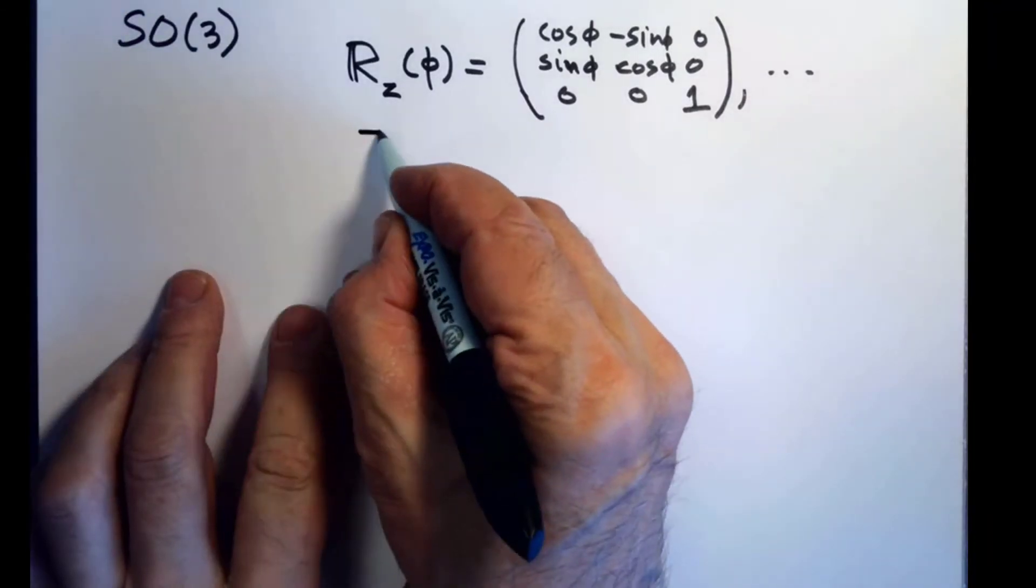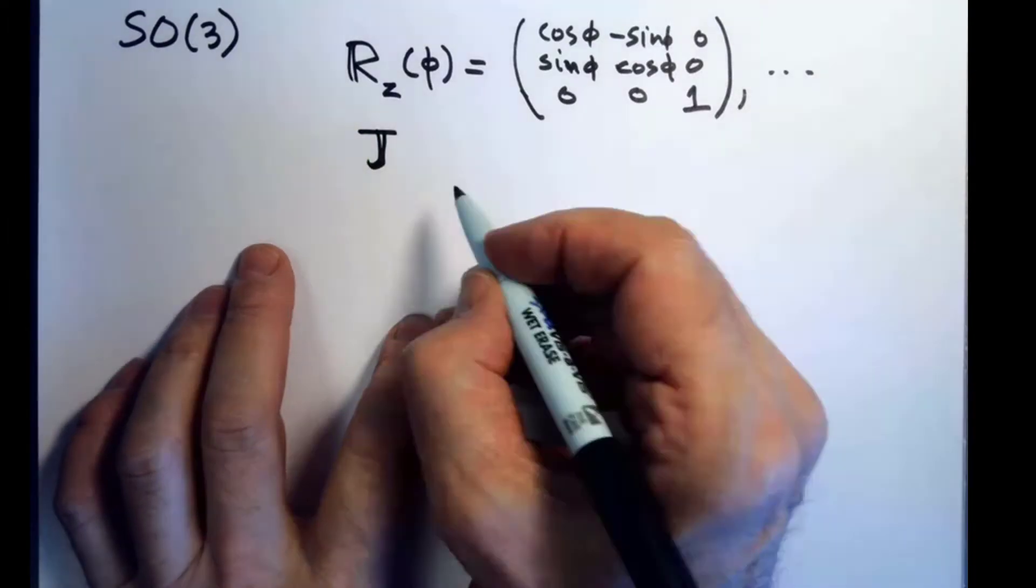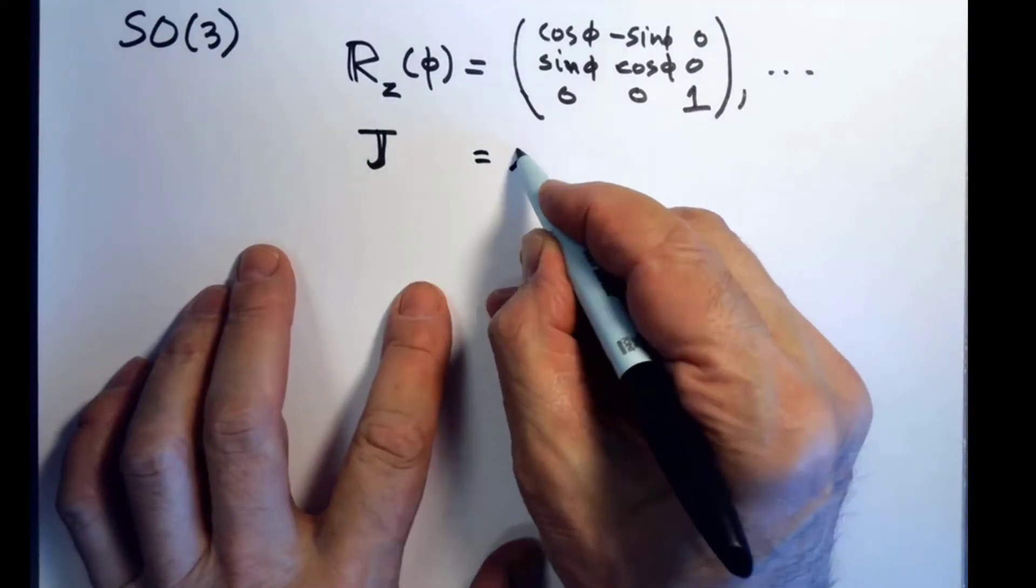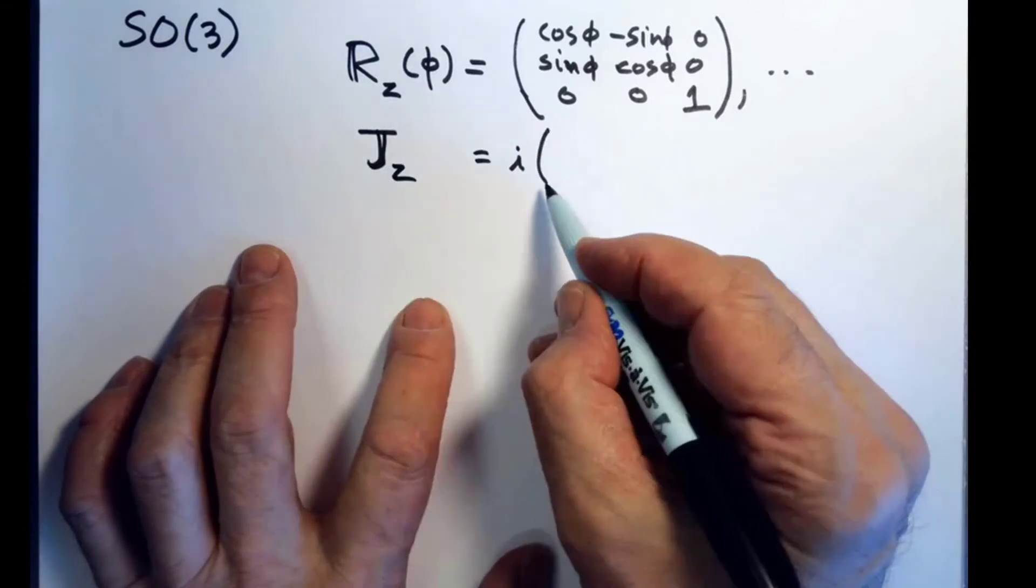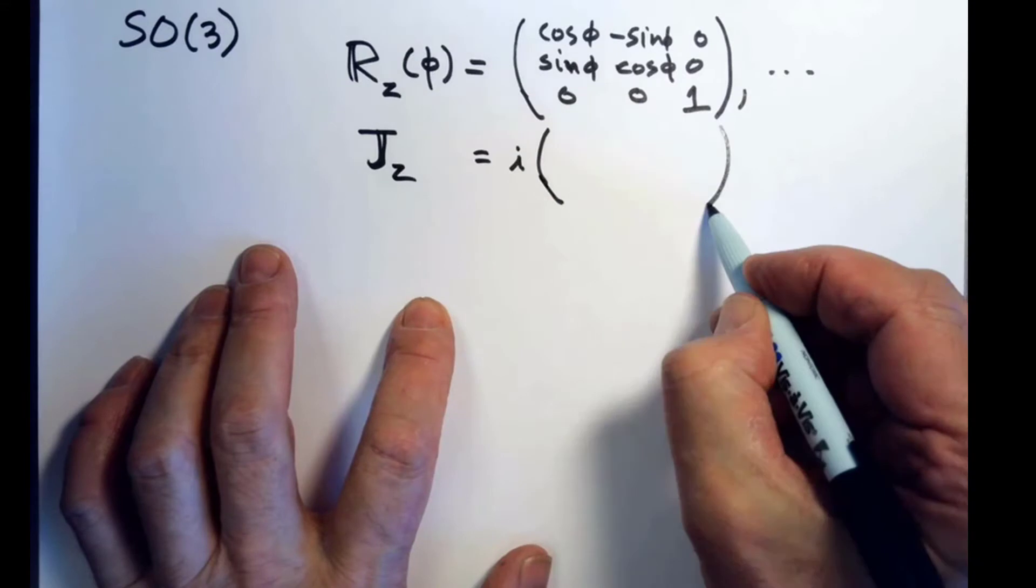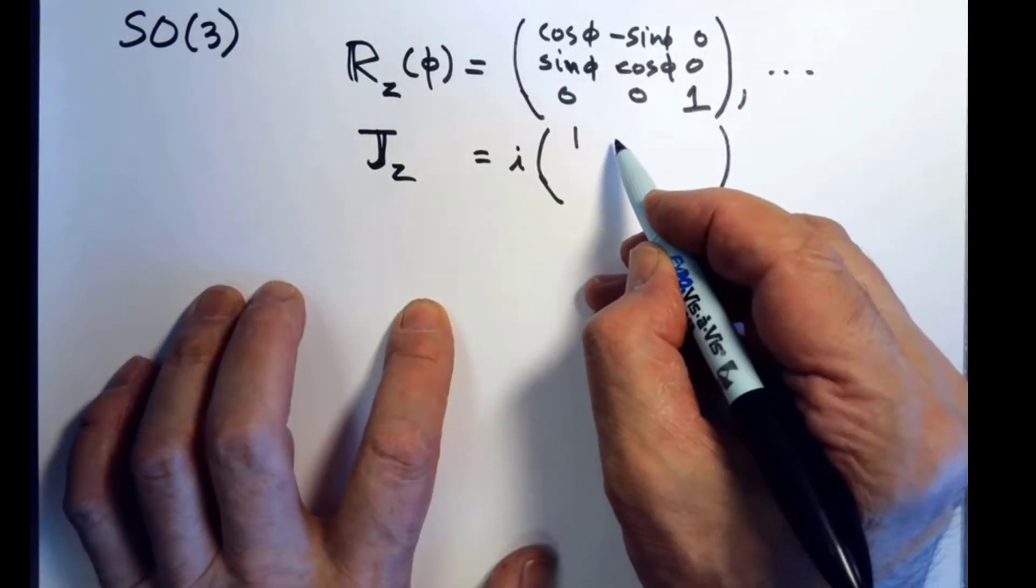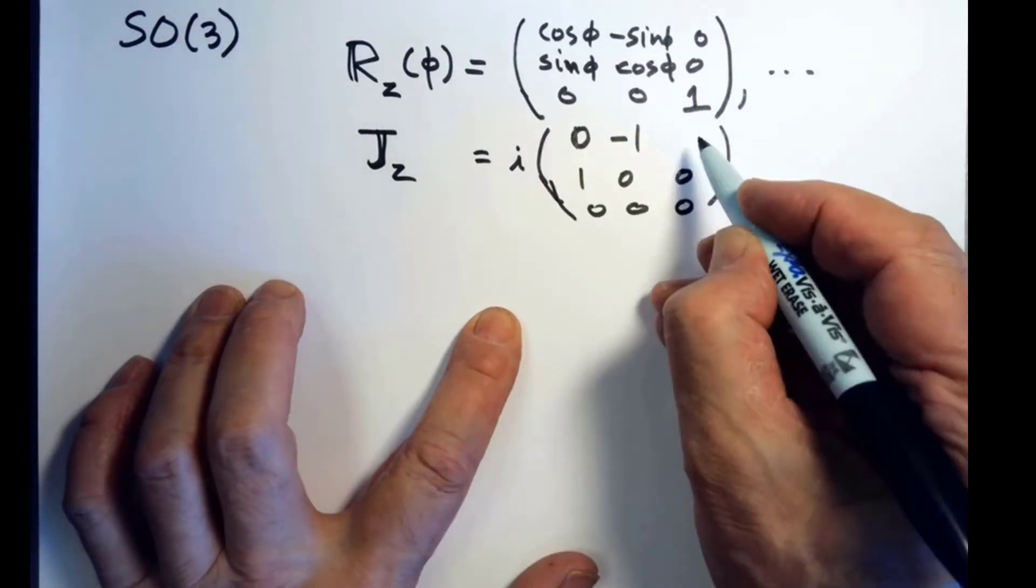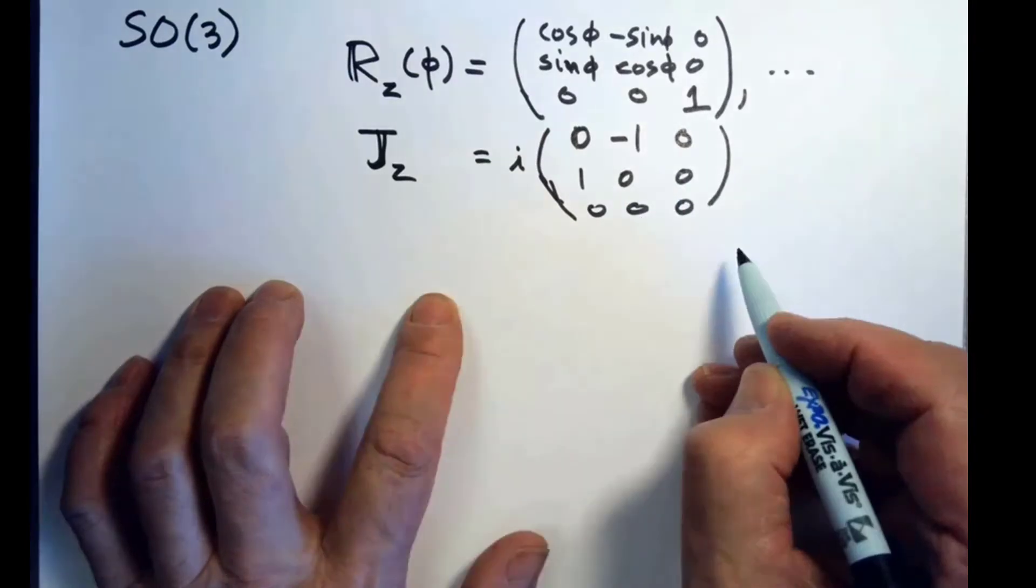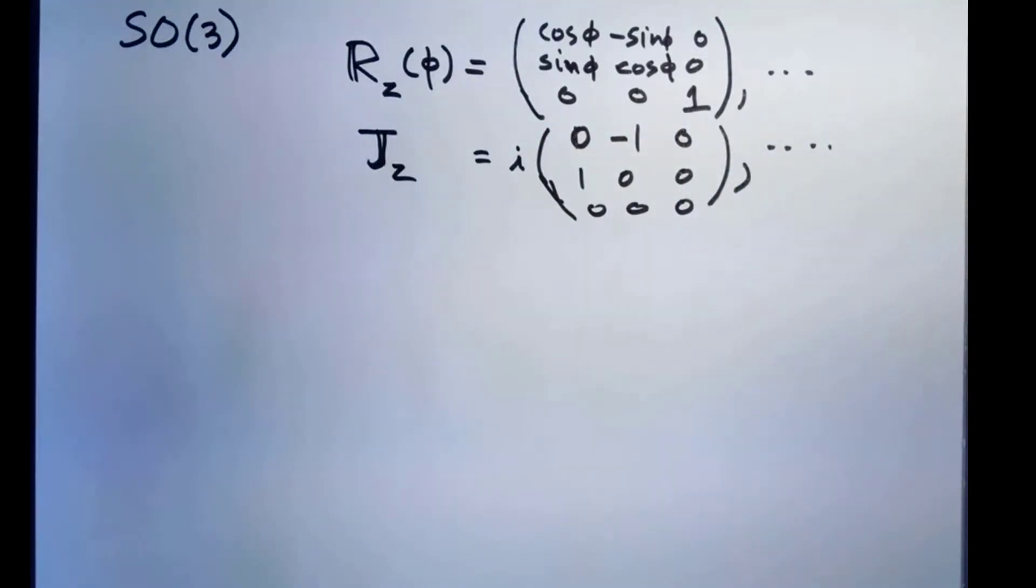And then it's obvious how the j's work. And they have an i in them. And they're just infinitesimal version of this. So, sine starts out proportional to the phi. And you don't generate anything here. So, that was pretty obvious.